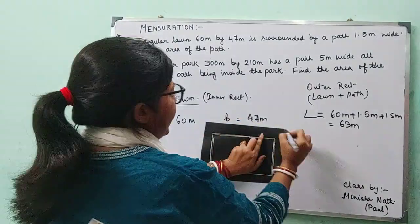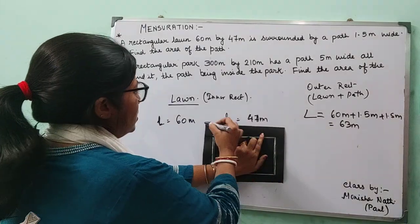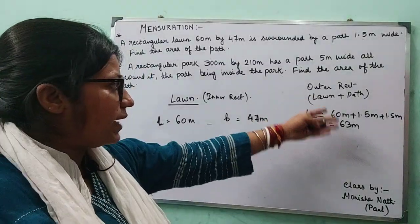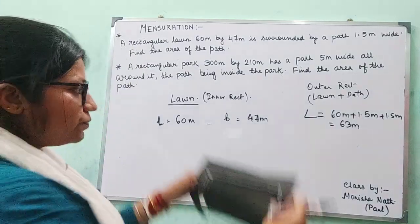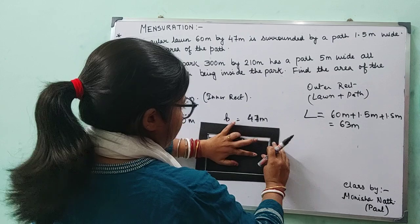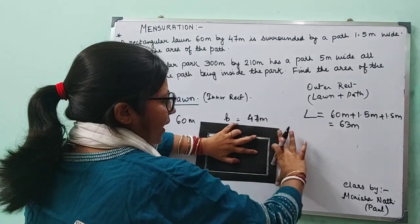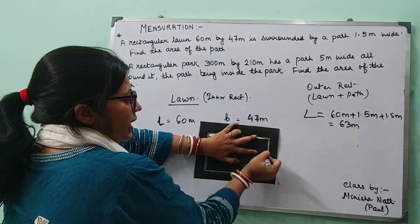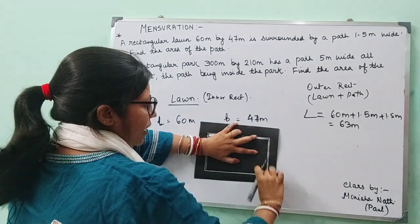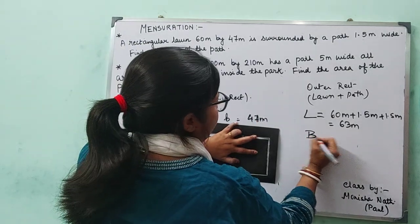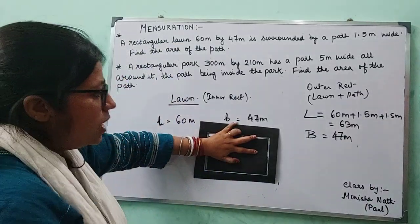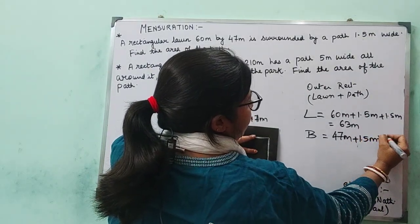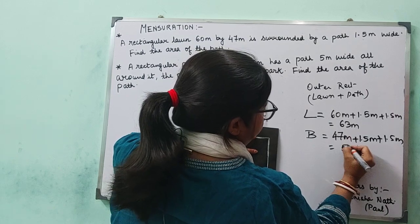This outer length is parallel to the inner length — they are equal in position. So the length of the outer rectangle, including the lawn and the path, is 63 meters. Similarly, to get the outer breadth, I add the path width on both the top and bottom sides. So breadth equals 47 plus 1.5 plus 1.5, giving 47 plus 3, which is 50 meters.